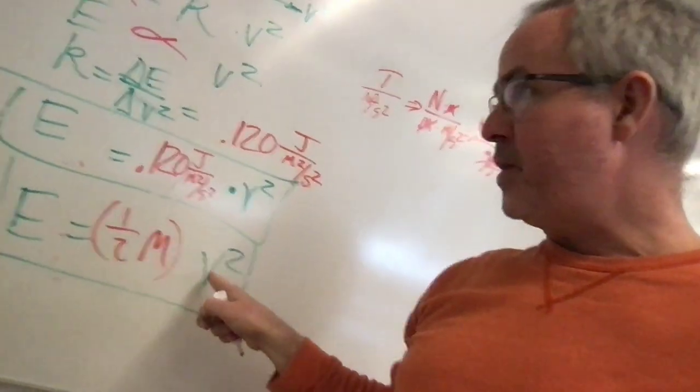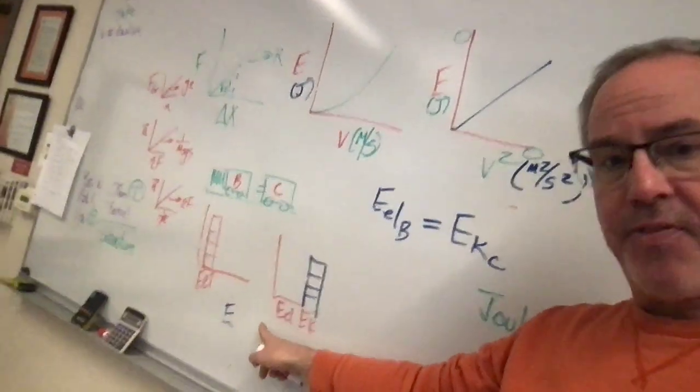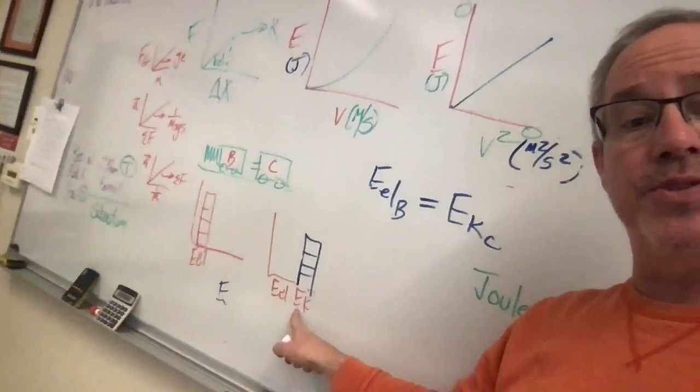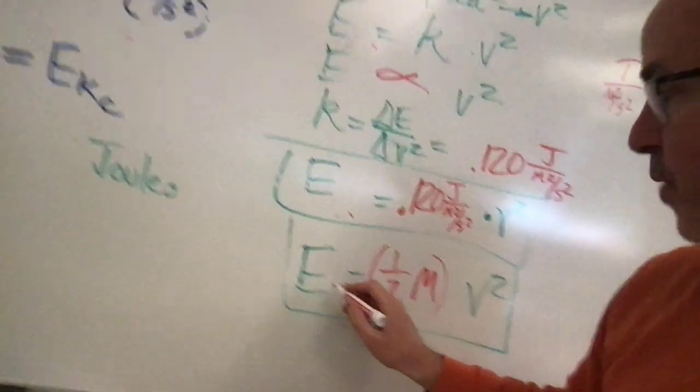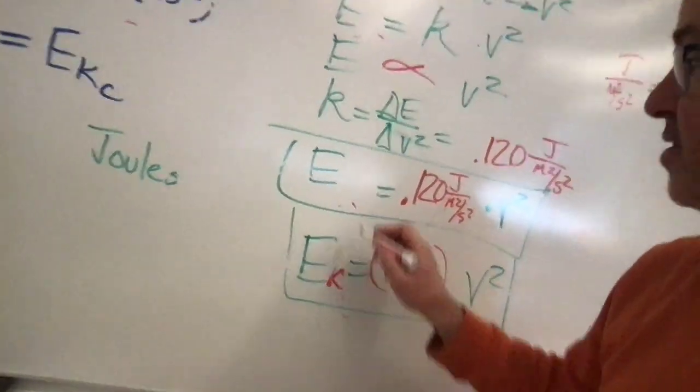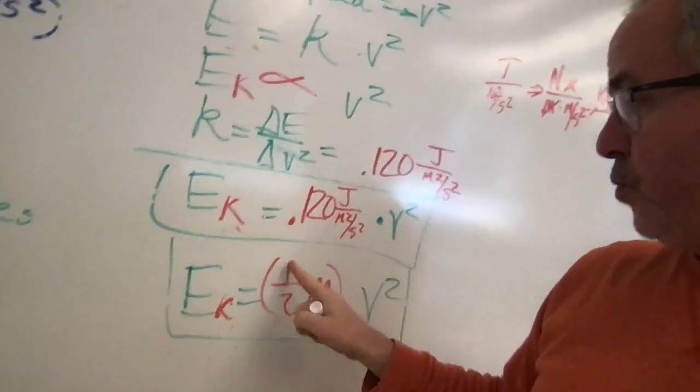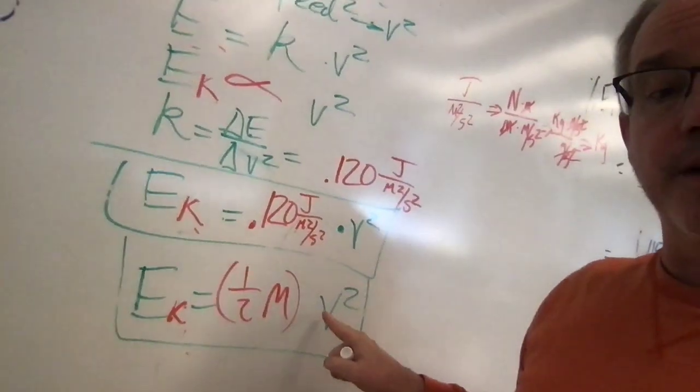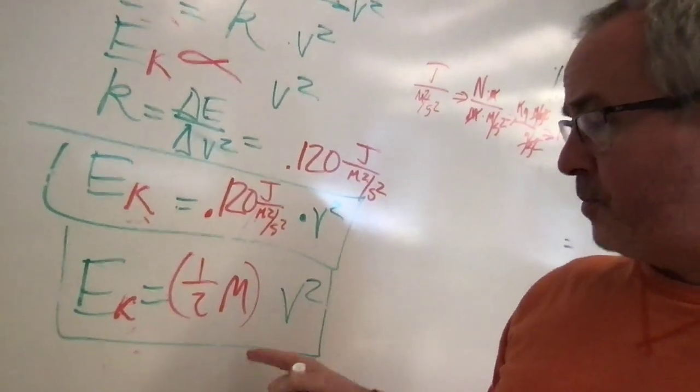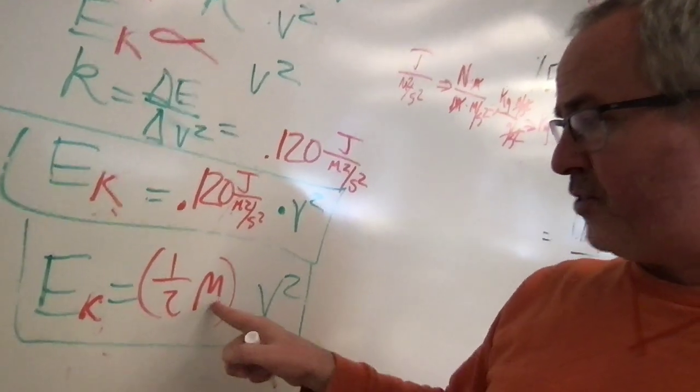So now we have a new equation: energy is equal to one-half the mass times the speed squared. And remembering that the elastic energy that we started with was the kinetic energy at the end we can now adjust this so the kinetic energy is equal to one-half the mass times the speed squared.